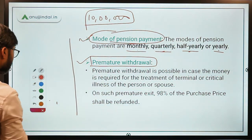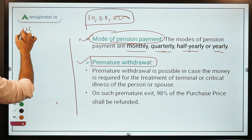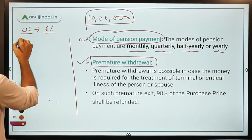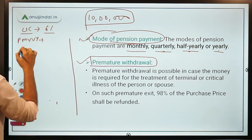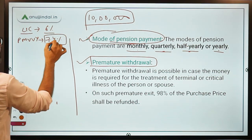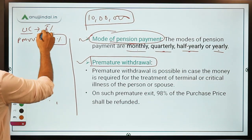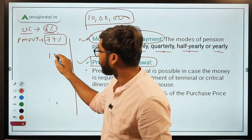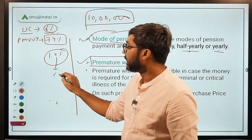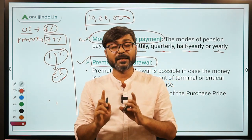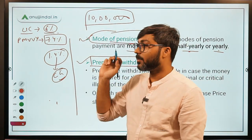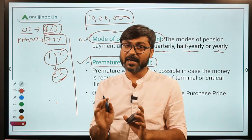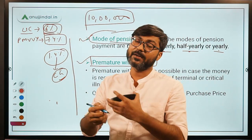If LIC invests in the market at, say, six percent per annum, but the rate of return guaranteed to old age persons under PMVVY is seven point four percent for the financial year, then LIC gets a slightly lower return. The difference will be provided by the central government. So the government covers the gap between the market return and the assured rate.